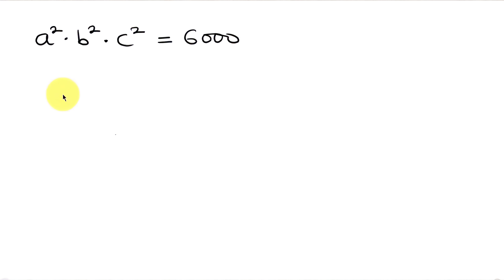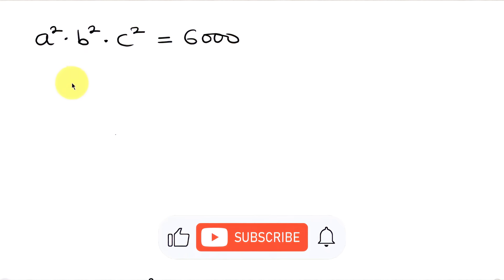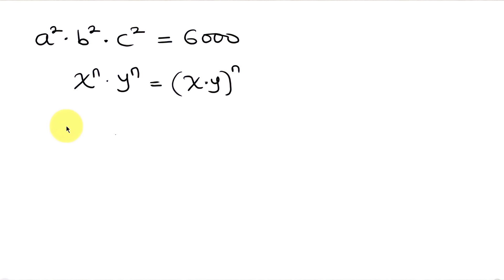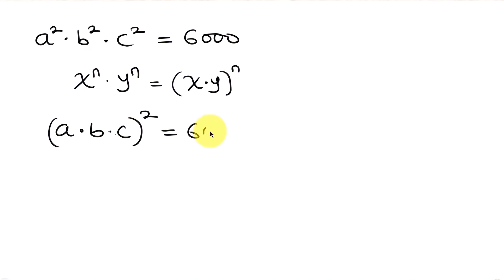Our next step is to apply the law of indices, which says that x to the n times y to the n — when they have the same exponent — equals x times y raised to the common exponent n. Applying this to the left-hand side, since they all share exponent 2, the expression becomes a times b times c, all raised to the power of 2, which equals 6000. So (abc) squared equals 6000.